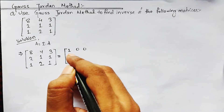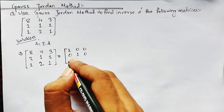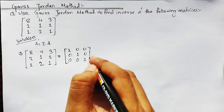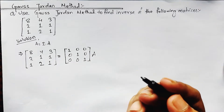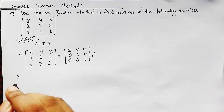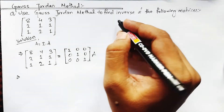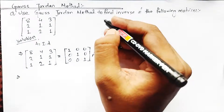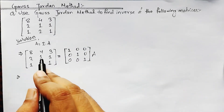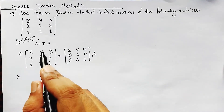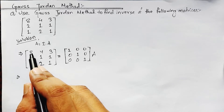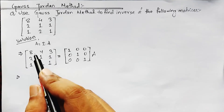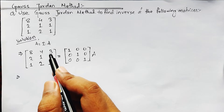The identity matrix of order 3×3 is [1,0,0; 0,1,0; 0,0,1], and this is multiplied by A. Now, what we need to do is convert this matrix into the identity matrix — meaning we make the diagonal elements 1,1,1 and all off-diagonal elements zero.